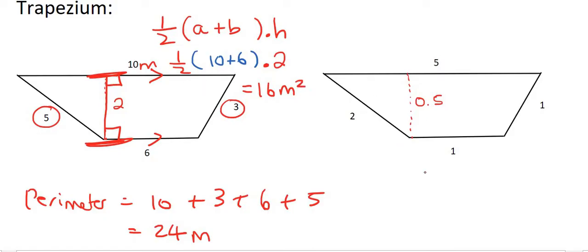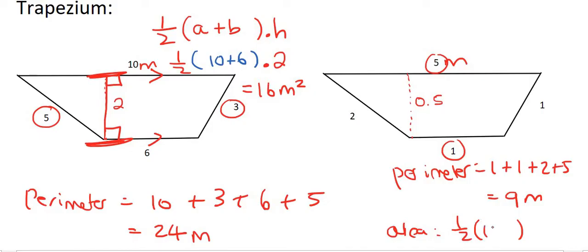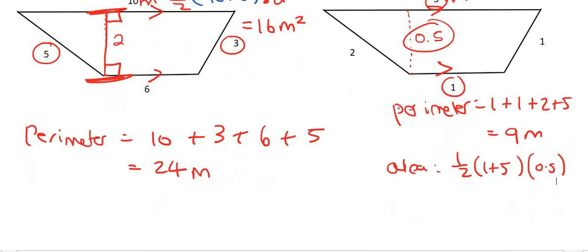Then moving on to the example on the right-hand side, the perimeter is very easy. You just add everything together. So that's going to be 1 plus 1 plus 2 plus 5, and that's going to give you 9. Let's just say that that's meters. Then for the area, we know how to do this by now. The formula says half, then you add these two together, so 1 plus 5, which ones are we adding? The two that are parallel to each other. And then the height is this one over here, which is 0.5. You can go ahead, you can type that all in on the calculator, and it should give you 1.5 meters squared.